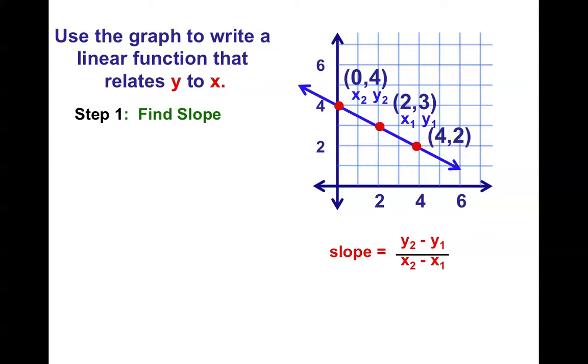Once I have my two pairs, I have my x1, y1, my x2, y2. I plug them in carefully. And I get my slope of negative 1 half, which is what it looks like in the picture. Down 1 is negative 1, and to the right 2 is positive 2. So it's rise over run. Down 1 over 2 gets you a slope of negative 1 half.